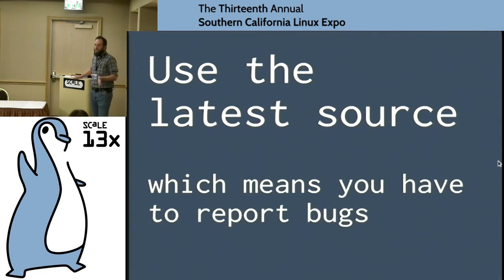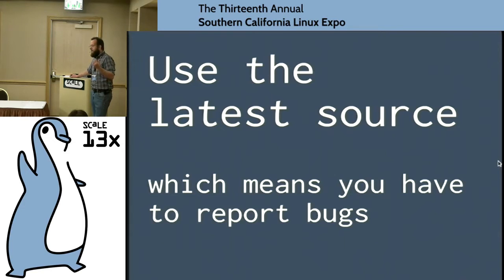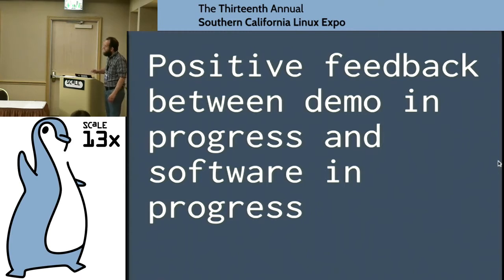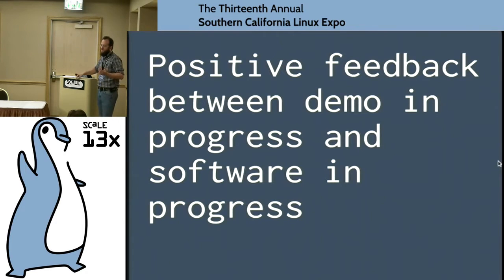Figure out a way to track the software you're demoing. You have to report bugs when using the new stuff. If you report bugs, they'll tell you it's fixed in the new version — it's a feedback loop. You use the new stuff, you file more bugs, they tell you to use the new stuff. You get a positive feedback loop between your demo in progress and the software in progress. You become, in effect, the customer that the developers are listening to when you're putting your demo together.